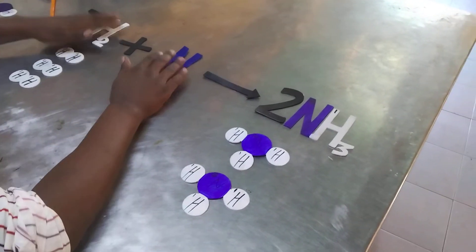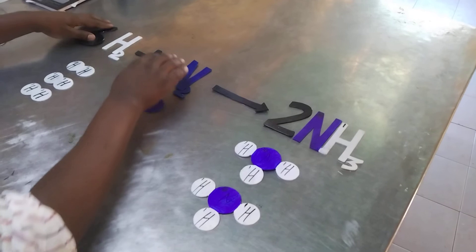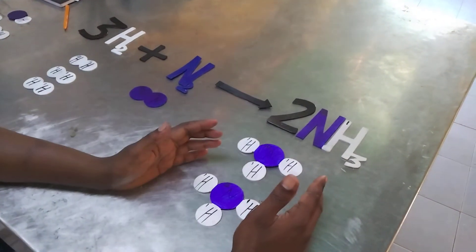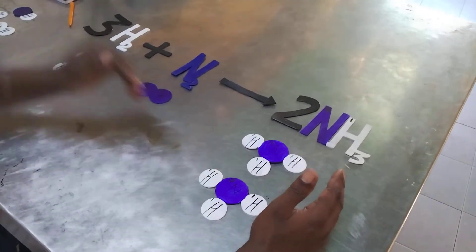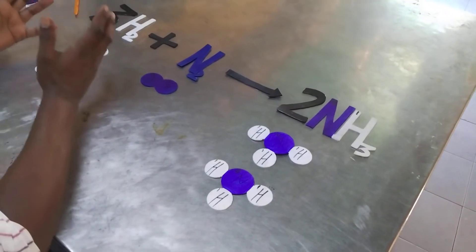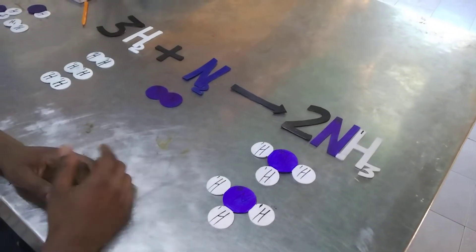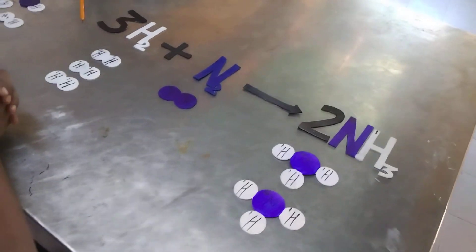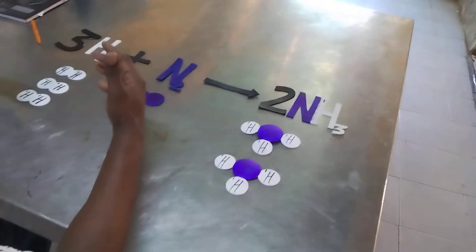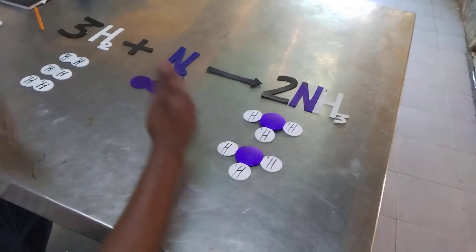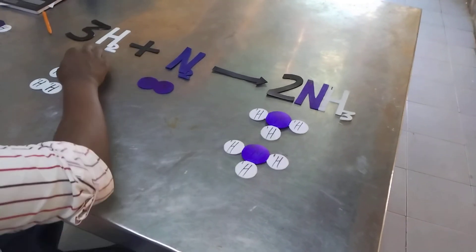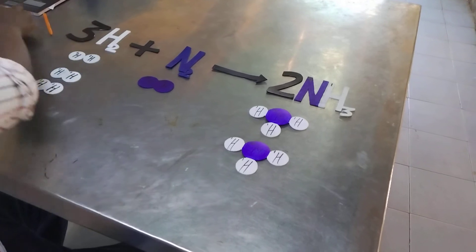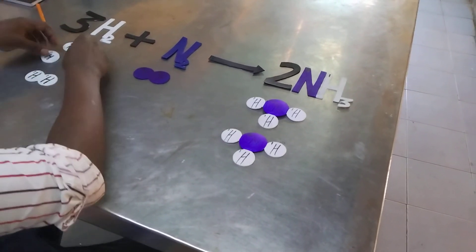When a reaction takes place, there are some activities that take place on the side of the reactant for us to produce the products. There is what we call bond breaking and bond formation. These atoms — the bonds are going to break and then we form new bonds to form new products. To be able to see that, we are going to replace our molecules with detachable molecules.